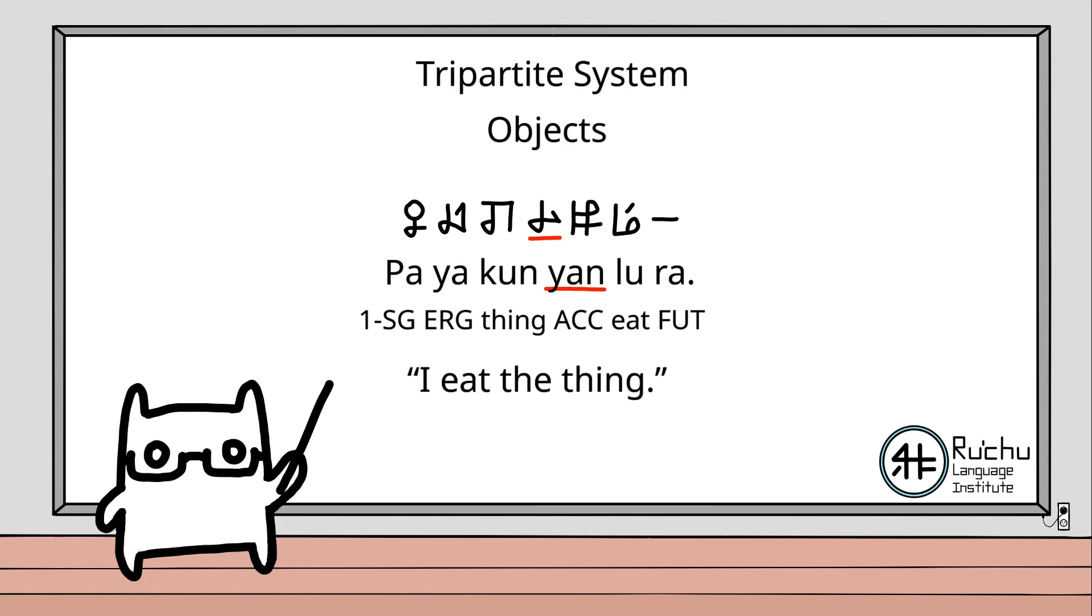Here, kun, meaning thing, is labeled with the accusative marker, because it is the object of the sentence. In addition, note that the subject of the sentence is marked with the ergative, as opposed to the intransitive.